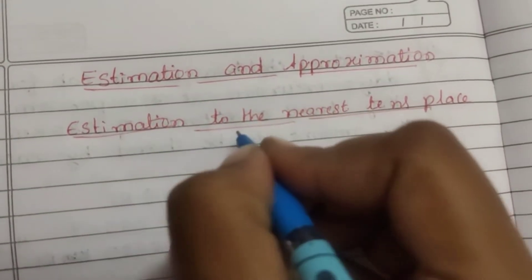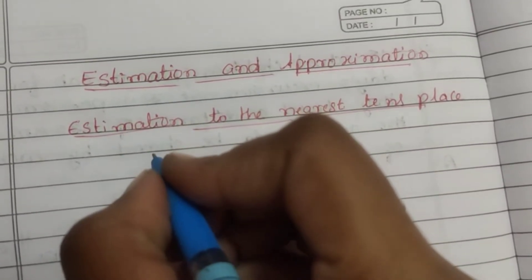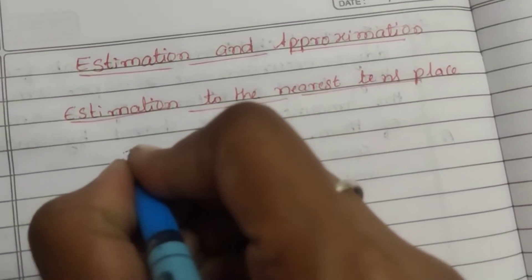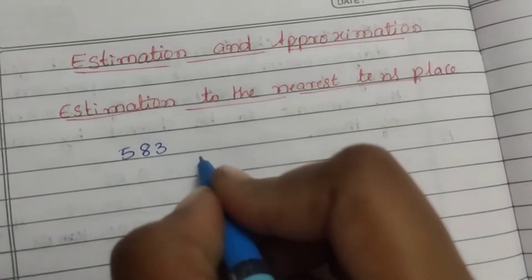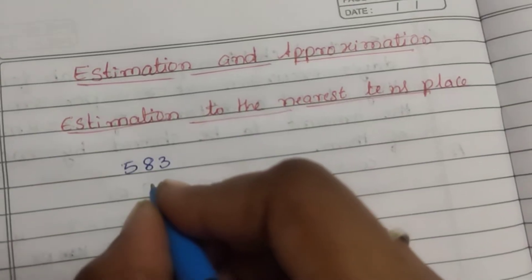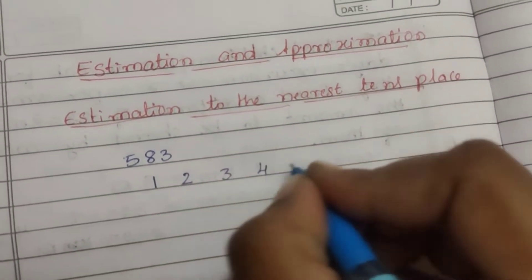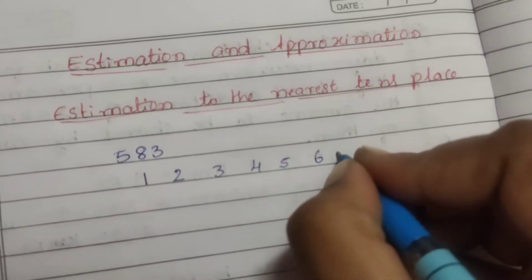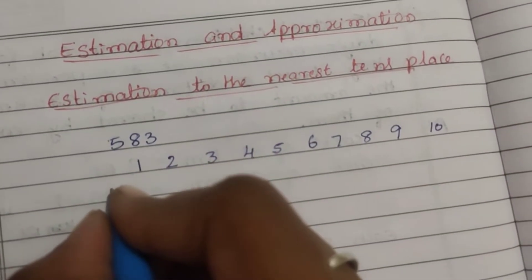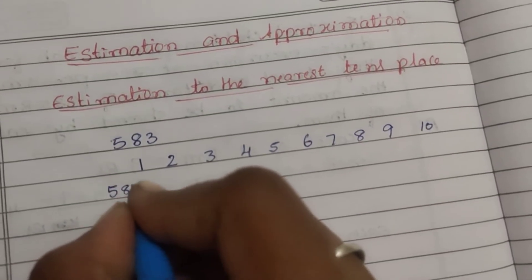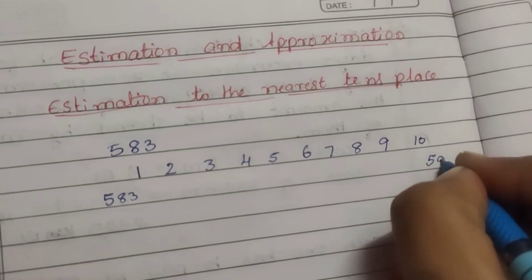Estimation is one of the most important things. For example, 583. Let's make an estimate. How do you make an estimate? For example, 0.5, 6, 7, 8, 9, 10. Here, 583. Next, 5, 90.